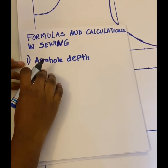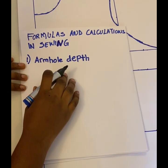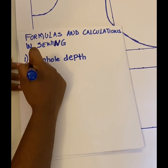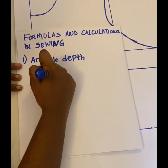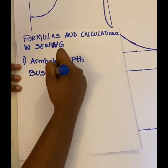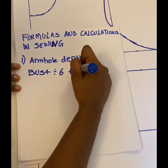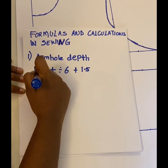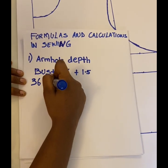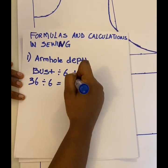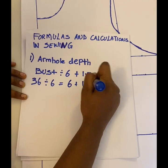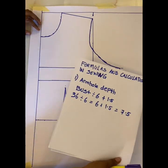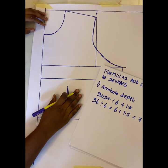The first formula we're going to be looking at is the armhole depth. The formula for calculating this is your bust measurement — let's say B for bust — divided by 6, plus 1.5. So let's say your bust measurement is 36 inches: 36 divided by 6 equals 6, plus 1.5 gives you 7.5. I'll be using a basic bodice pattern to illustrate what the armhole depth is.